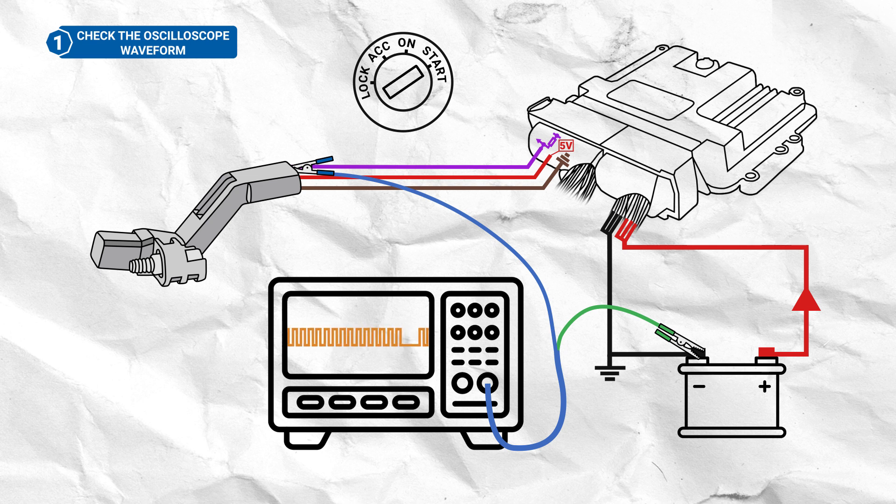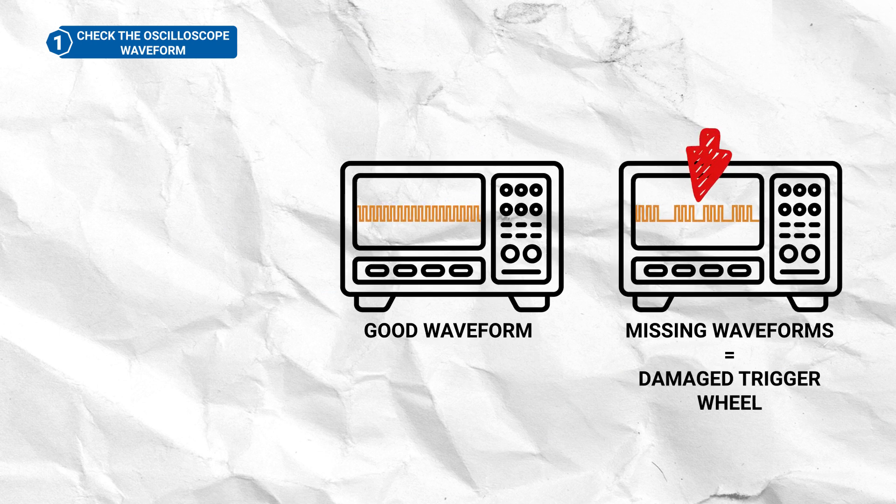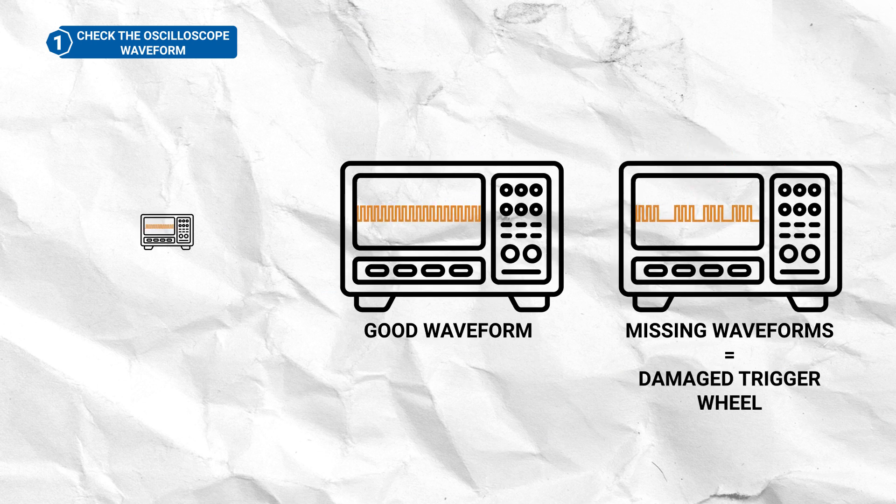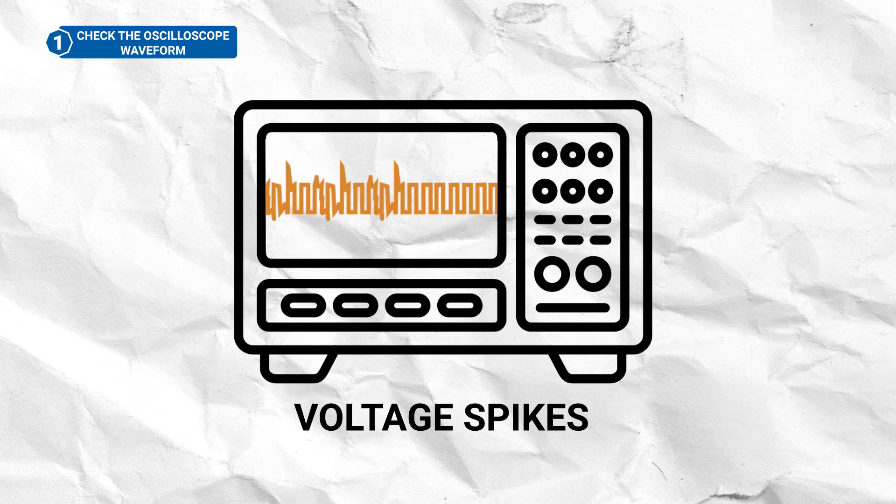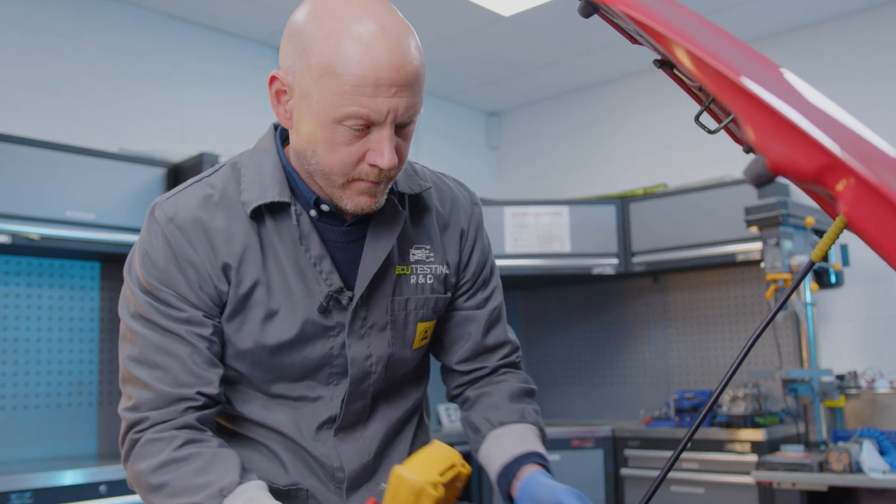The waveform should be free of noise and have clear peaks and troughs. Any missing waveforms could indicate a fault with the trigger wheel, however abnormalities in the waveform shape and spikes in voltage amplitude could indicate a faulty sensor or circuit fault. If you observe the latter, then it's time to crack out the multimeter and start testing the crankshaft sensor circuit.